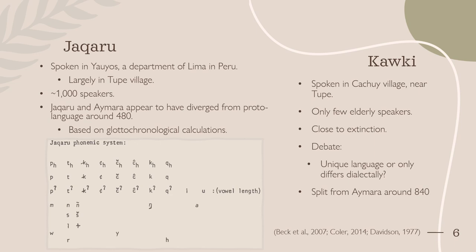Of these 39 phonemes, there are 36 consonants and 24 voiceless stops, which is 9 more voiceless stops than Aymara.